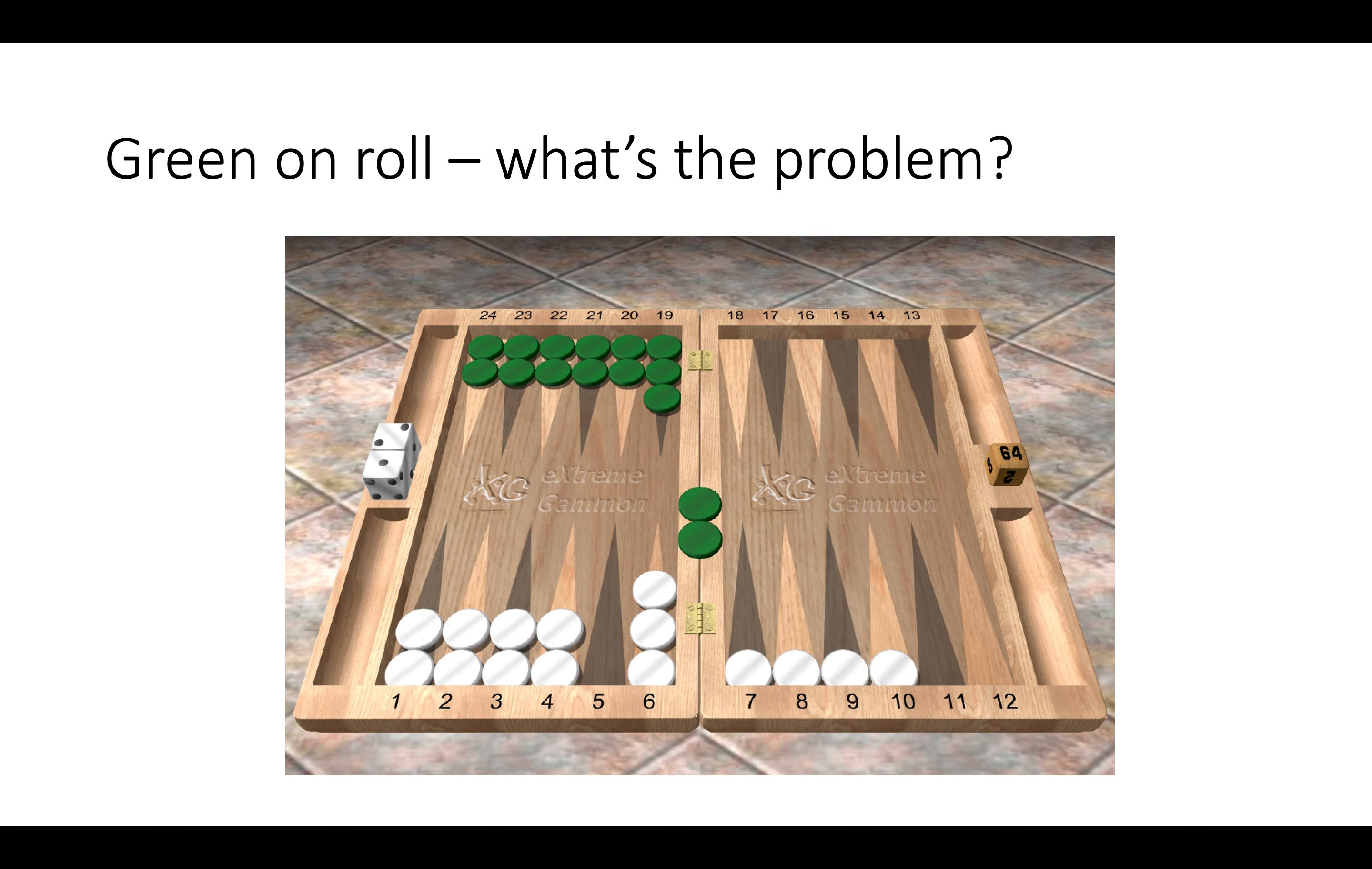However, if green was on roll, it would be a slightly different scenario, and white here has created a problem for himself. Now what might be that problem?